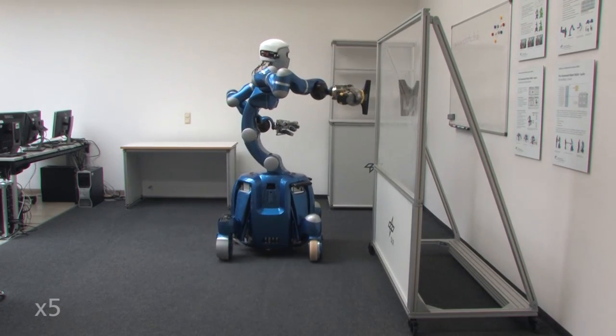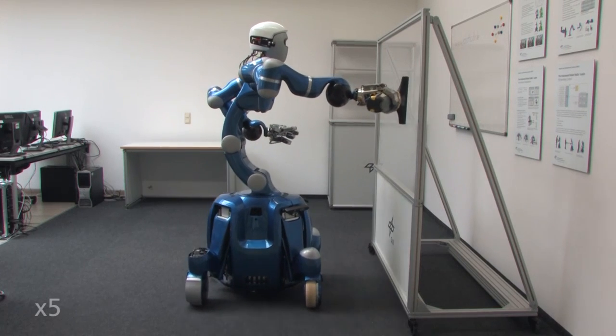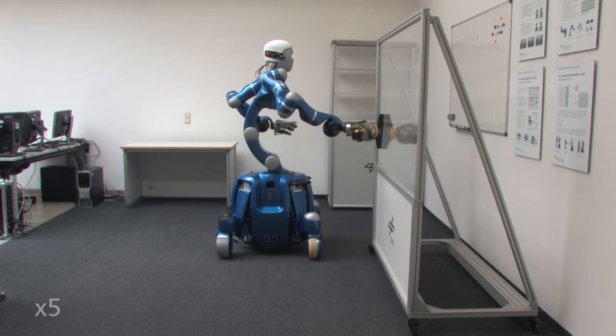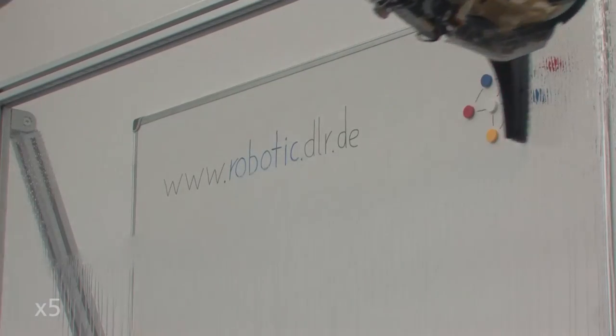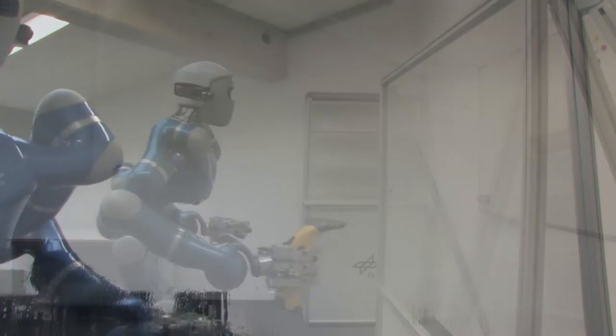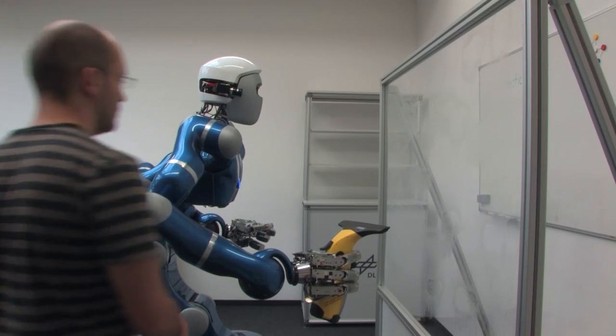An advanced whole body impedance control architecture is utilized to realize synchronized motions of the entire robot. The impedance control architecture allows the robot to simultaneously maintain contact with the window and avoid singularities and self-collisions.